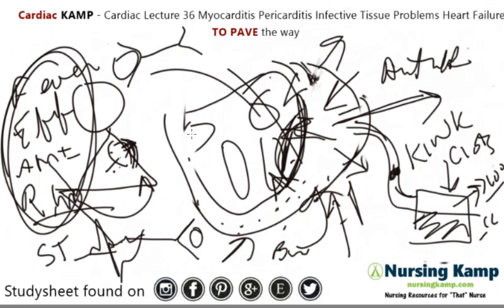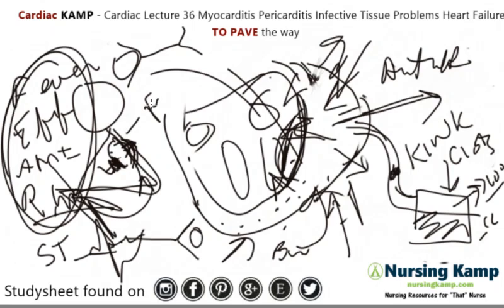Pericarditis is acute and usually caused by something invasive. Monitor for cardiac tamponade. Key findings include distended neck veins and distant heart sounds — very characteristic. The patient sits forward, and you auscultate heart sounds with them leaning forward, listening specifically for that friction rub.